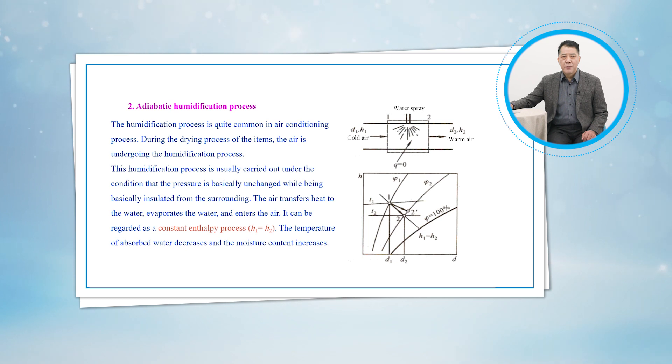If humidification is accomplished by spraying water into the air stream instead, part of the latent heat of vaporization comes from the air, which results in the cooling of the air stream. This process can be regarded as a constant enthalpy process.